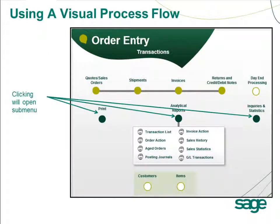If you click on the dark green solid circles, they will actually cause submenus to appear. For example, if we have a look at Analytical Reports, we can see that if you click on any of the menu options under Analytical Reports — for example, the Transaction List, the Order Action or Age Orders report — the appropriate report interface will appear.